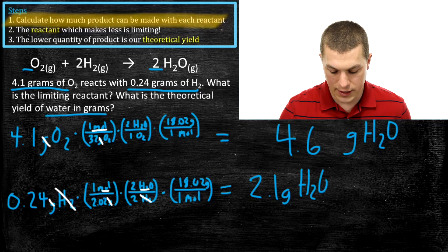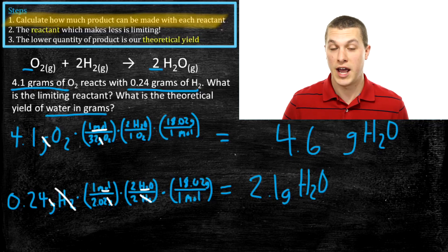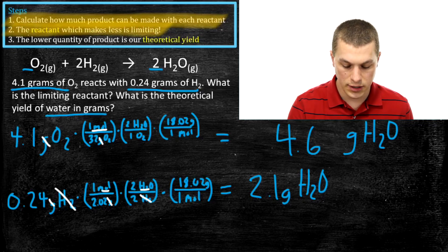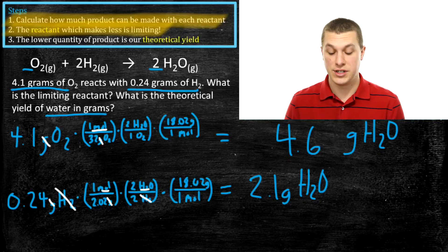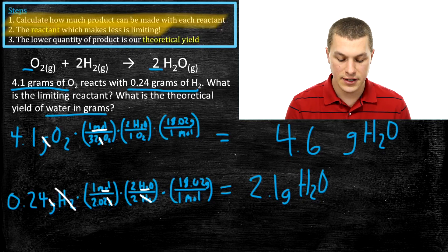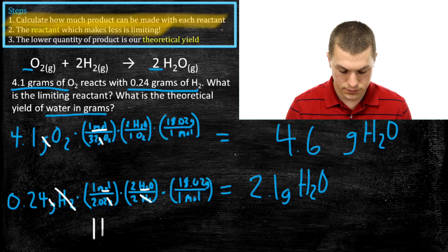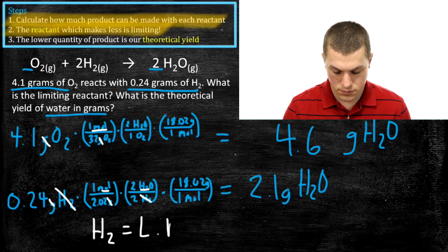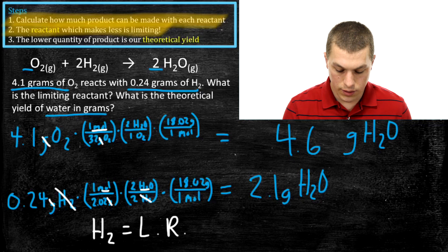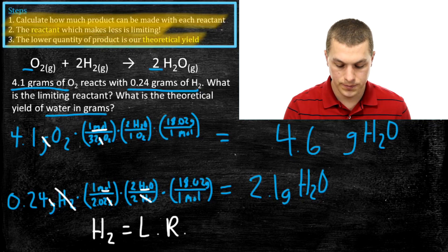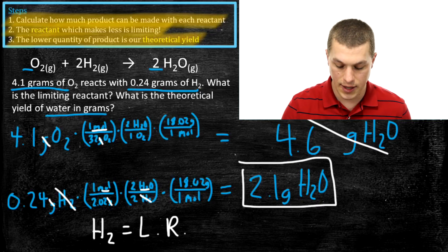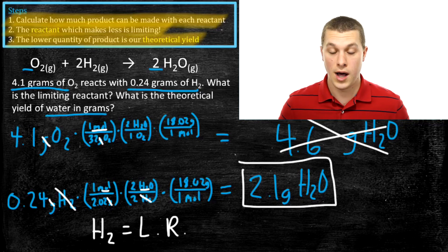So this is a limiting reactant problem where we go from grams of reactant to grams of product — that was step one. Now the reactant which makes less is limiting. My hydrogen results in 2.1 grams of water, while my oxygen results in 4.6 grams. That tells me hydrogen is my limiting reactant. The lower quantity of product is our theoretical yield, so 2.1 grams of water is what we could actually make. We'd never get 4.6 grams because our hydrogen runs out — so 2.1 grams of water is our theoretical yield.